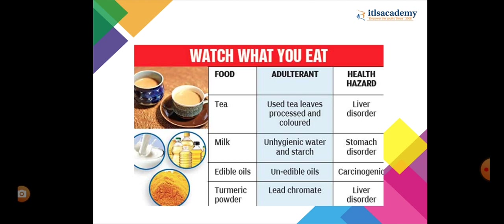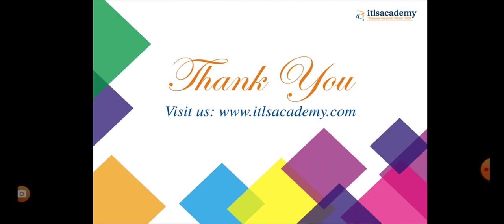Watch what you eat. For tea: adulterant used is processed and colored tea leaves — health impact is liver disorder. For milk: adulterant used is unhygienic water and starch — health hazard is stomach disorder. For edible oil: adulterant used is inedible oil — health hazard is carcinogenic effects. For turmeric: adulterant added is lead chromate — health hazard is liver disorder.